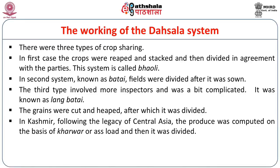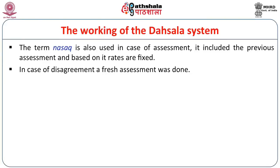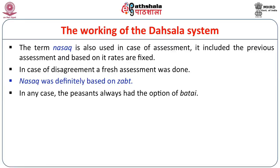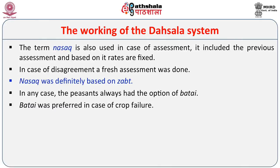In Kashmir, following the legacy of Central Asia, the produce was computed on the basis of karwar or aslode and then divided. The term nasak is also used in the context of assessment — probably it included the previous assessment and the basis on which rates would have been fixed. In case of disagreement, there was scope for fresh assessment if the peasant would want so. Nasak was based on zat. In any case, the peasant always had the option of batai or crop sharing. Batai was preferred during the time of crop failure because it gave the peasants relief, as cash revenue was always very high depending on the zat system.